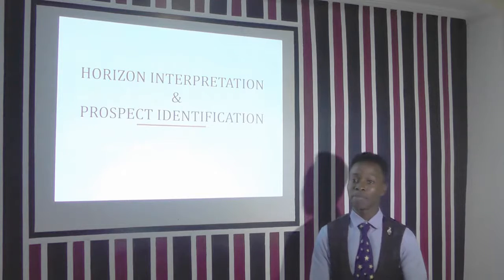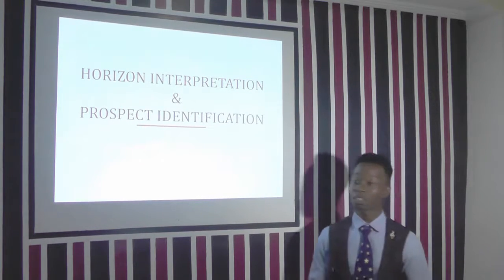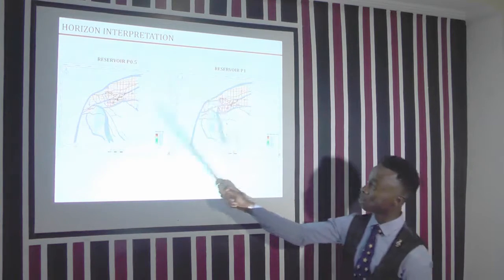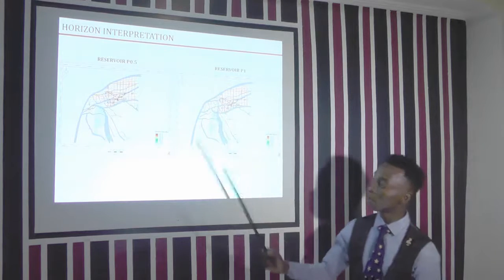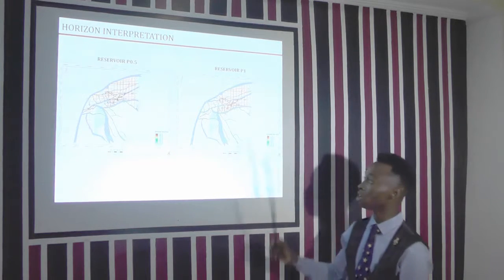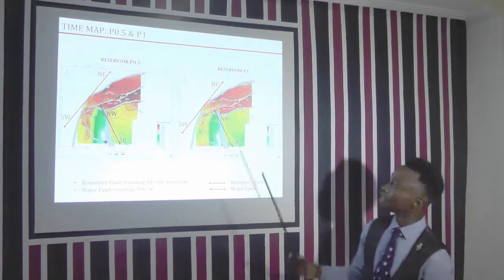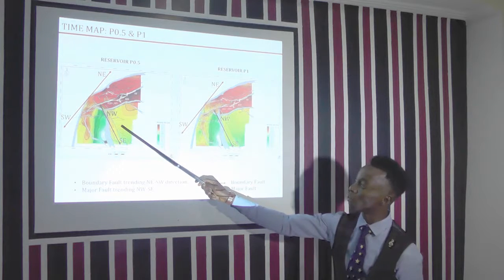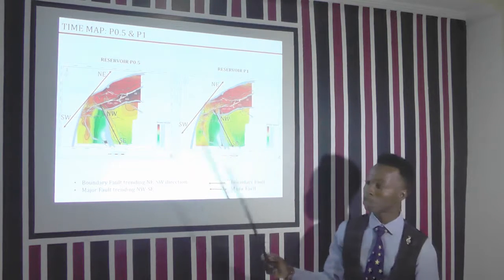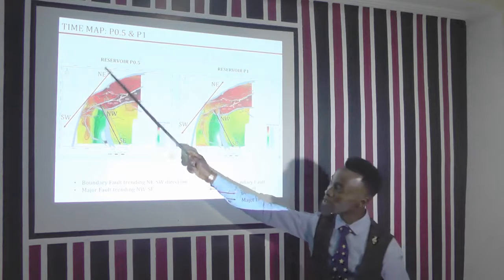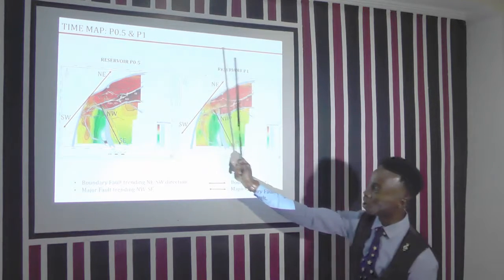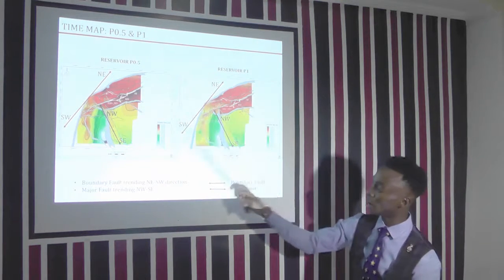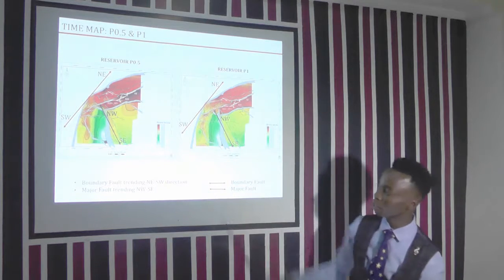My name is Eke Frey, and I will be presenting on the horizon interpretation and prospect identification. This is our mapped horizon for P0.5 and P1, mapped every 10 ms on our seismic section. This is our time map generated from the mapped horizon, showing our P0.5 reservoir and P1 reservoir with our fault polygon boundary. We have a main bounding fault trending from northeast to southwest, and another fault trending from northwest to southeast.